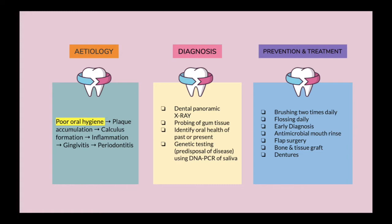For the diagnosis, what we can do includes dental panoramic x-ray, probing of gum tissue, identifying other health history past or present, genetic testing, and DNA PCR or saliva testing. For prevention and treatment: brushing two times daily, flossing daily, early diagnosis, antiviral biomarkers, flap surgery, bone and tissue grafts, and also dentures.